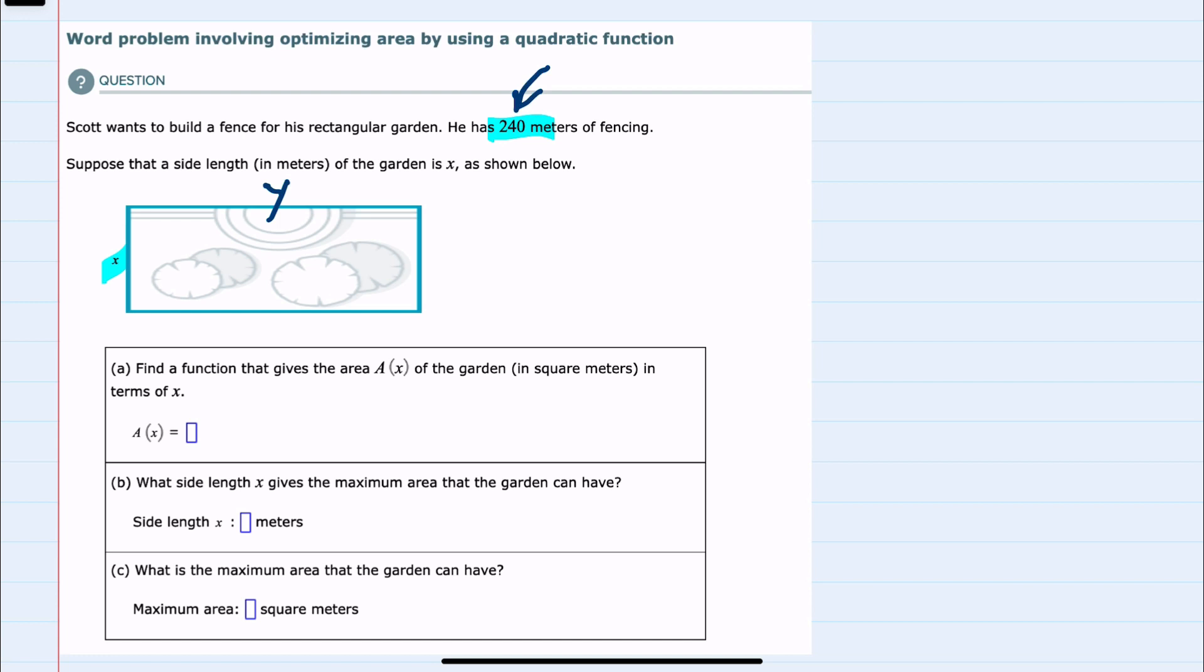And then since I know the maximum perimeter, since he only has 240 meters of fencing, I can say that 2 times x plus 2 times y, that would be the perimeter, would equal 240.